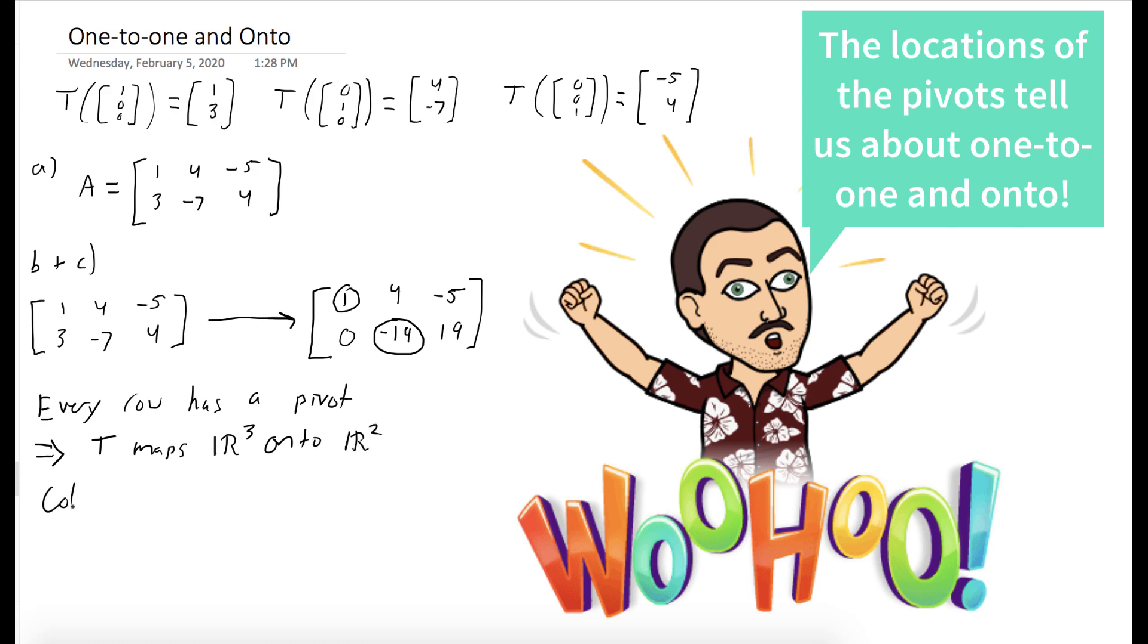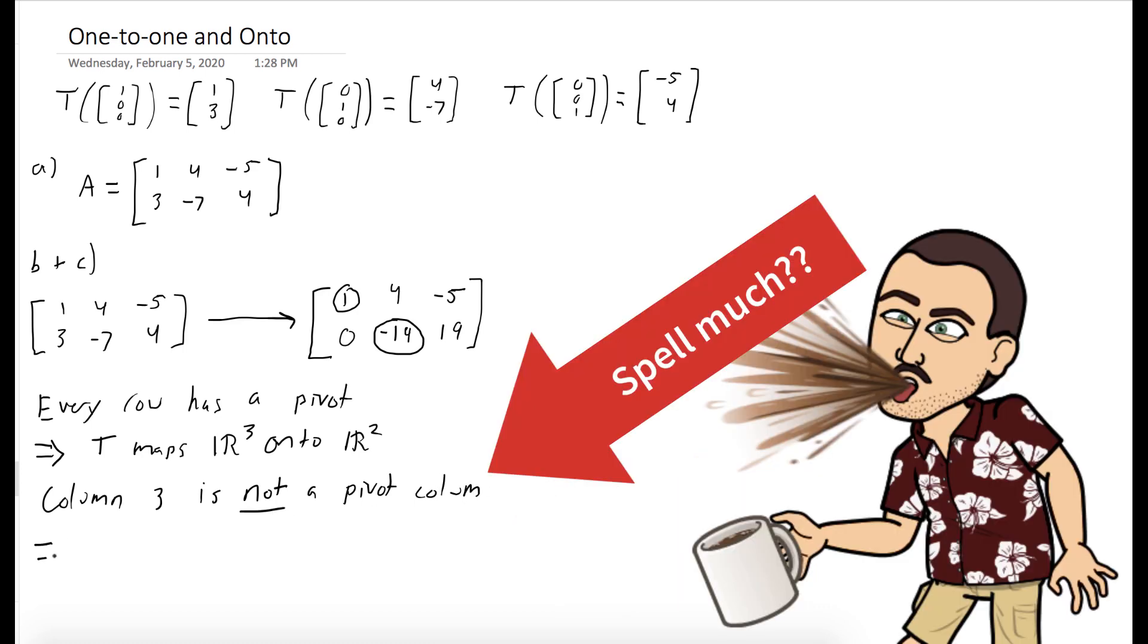But column 3 doesn't have a pivot, so we can conclude that T is not one-to-one.